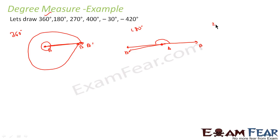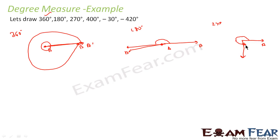Now let's plot 270 degrees. Starting with line AB: 90 degrees is here, 180 degrees is here, and 270 degrees brings us to this position — so this angle is 270 degrees, and the terminal side is B dash.